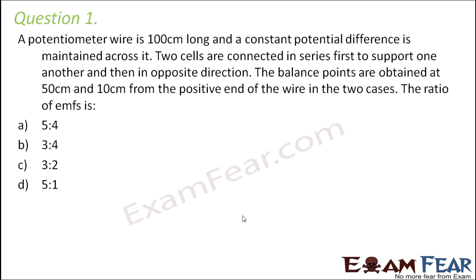Two cells are connected in series — first to support one another, and then in opposite direction. The balance points are obtained at 50 centimeters and 10 centimeters from the positive end of the wire in the two cases. We need to find the ratio of their EMFs. Let us go scenario by scenario.